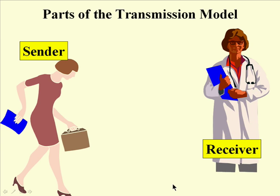Then on the other side is the aim of your transmission, which is your receiver. This can also be recipient, sink, target, audience — many different words. But it's where the transmission is directed.